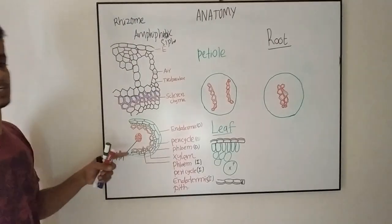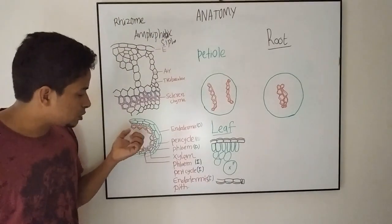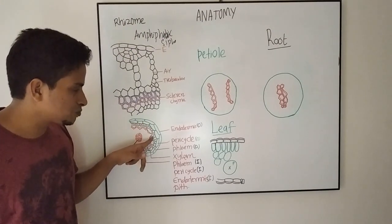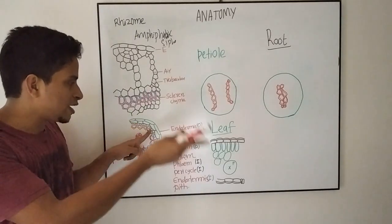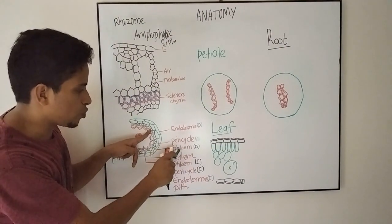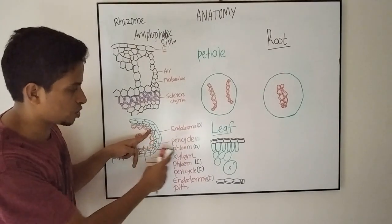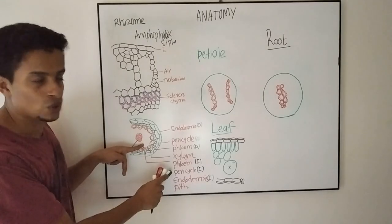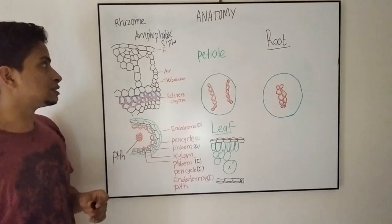This is the organization of amphifloic siphonostele. Coming to the cross-section observation of this stele region, you can see the central xylem strand. On both sides of the xylem strand, you can see outer phloem which is outer to the xylem, and inner to the xylem is inner phloem. This is how amphifloic siphonostele is organized.